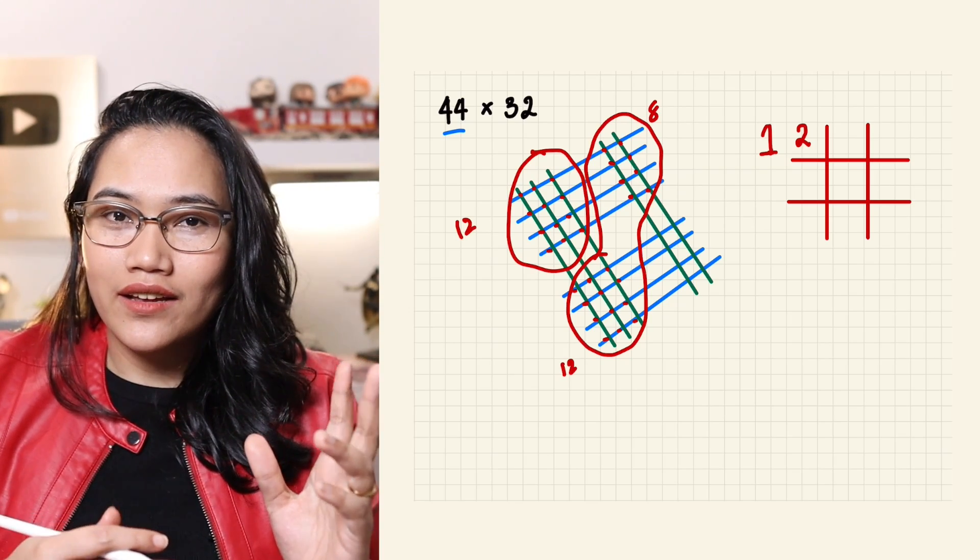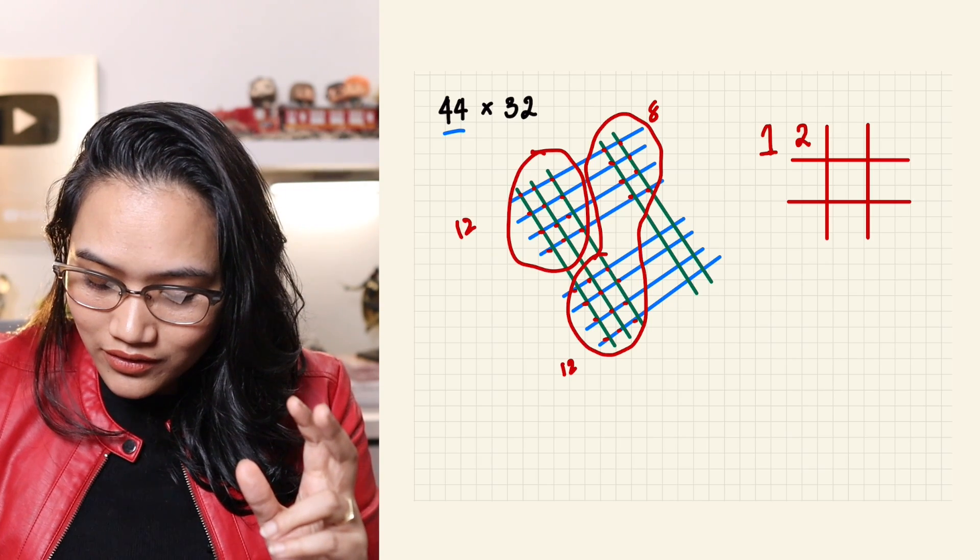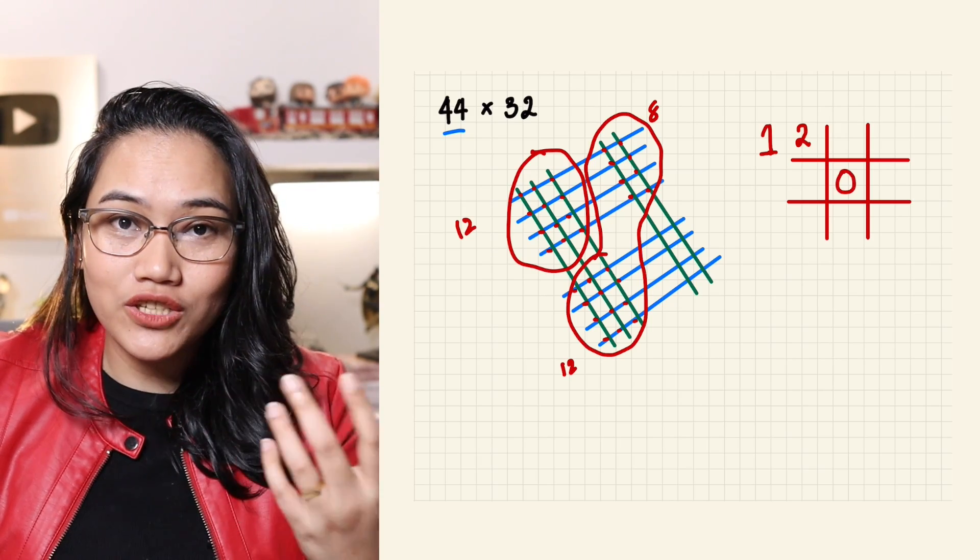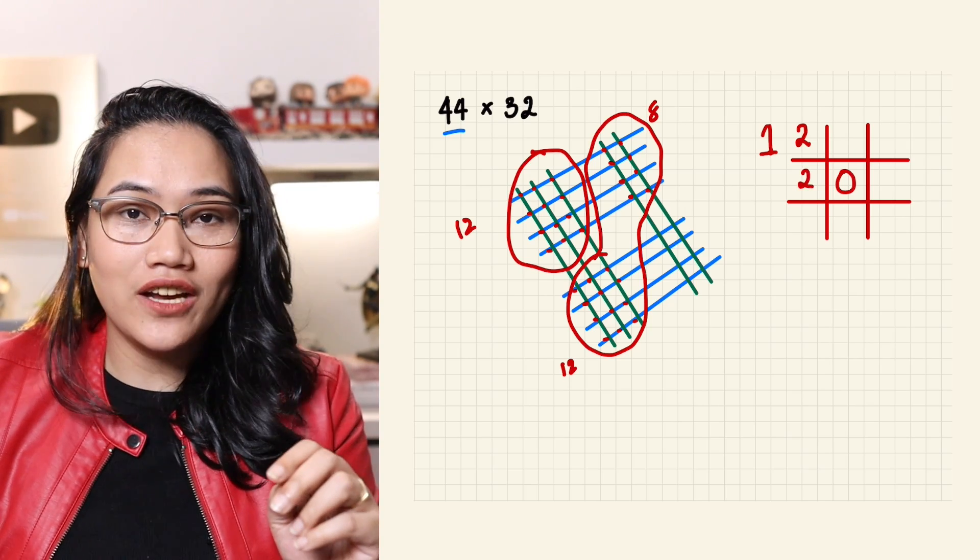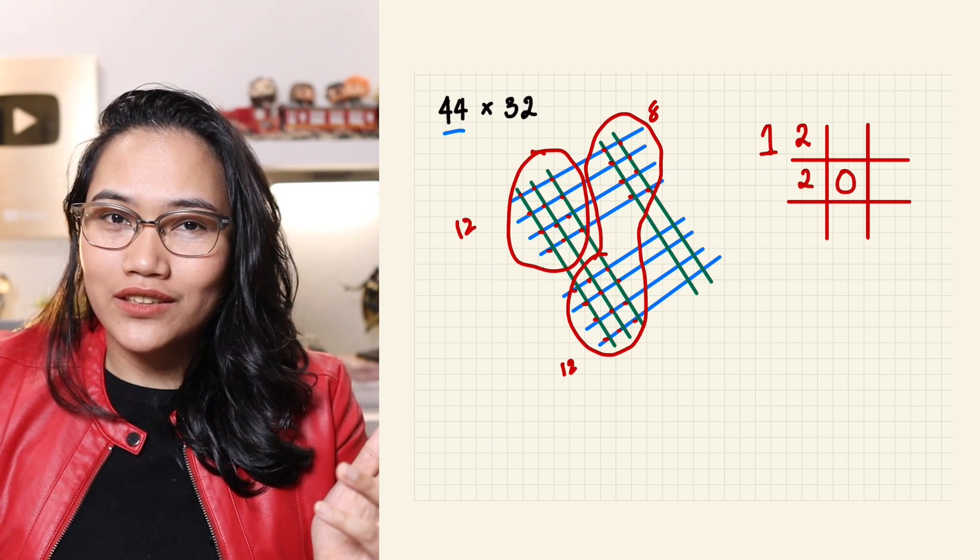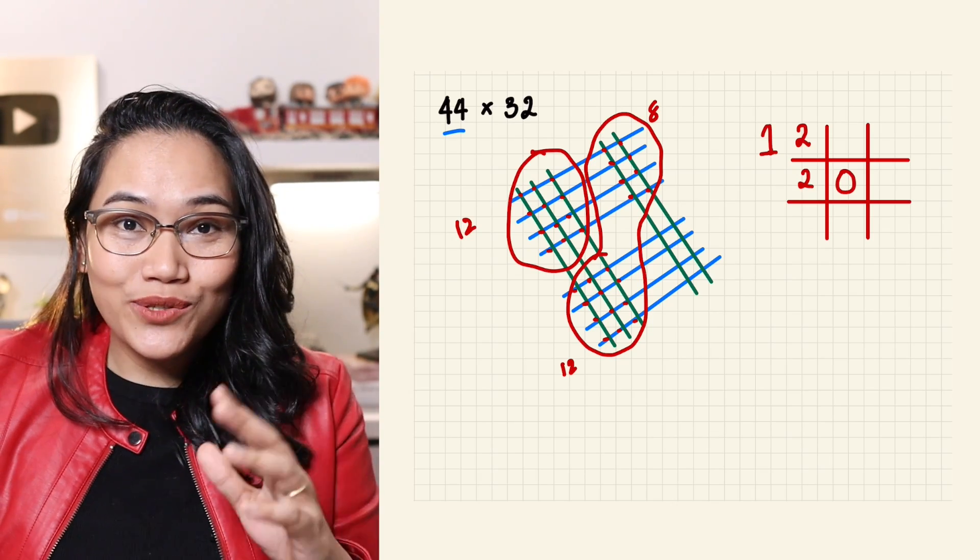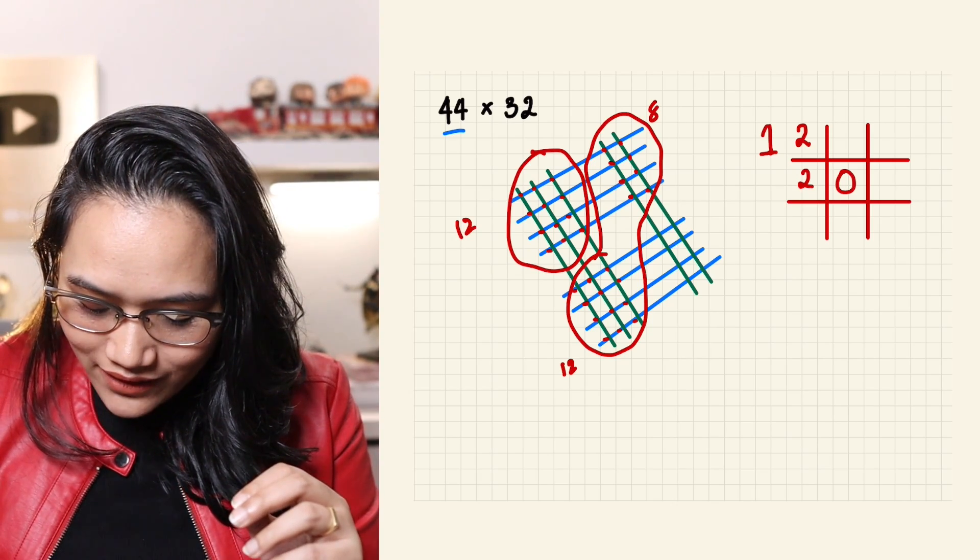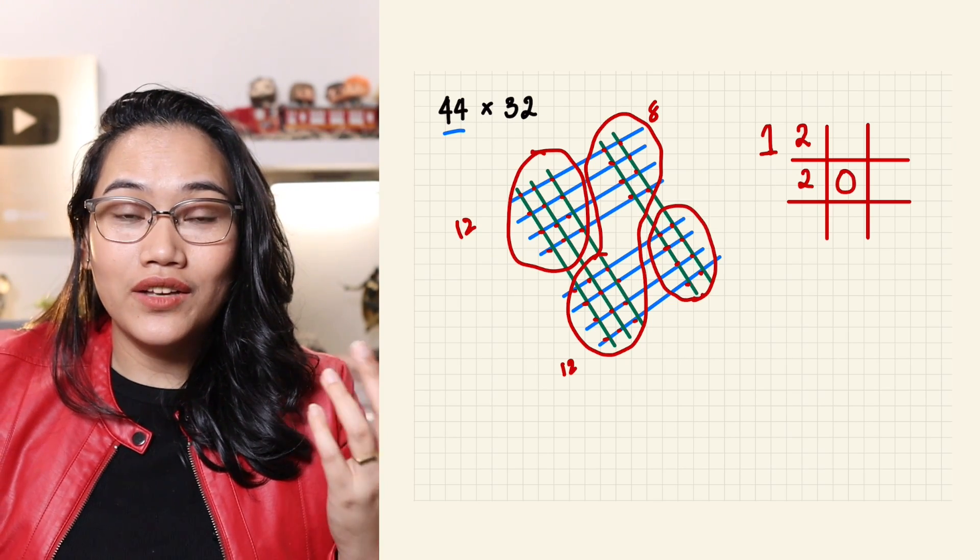2, 0. Remember how earlier the answer was placed in the second digit? That means the end of our answer, which is 0, we place here. And then, the 2 from 20, we align it here. I know it's a little bit more complicated, but this is how it works. Now, let's go to the next number on this side: 1, 2, 3, 4, 5, 6, 7, 8.